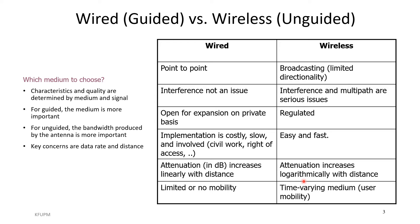Which medium should we choose — wired or wireless? It's important to know that the characteristics and quality of communication are determined by the medium and the signal. For wired systems the medium is more important, whereas for unguided wireless systems the bandwidth and the antenna are more important. The key concerns are data rate and distance.